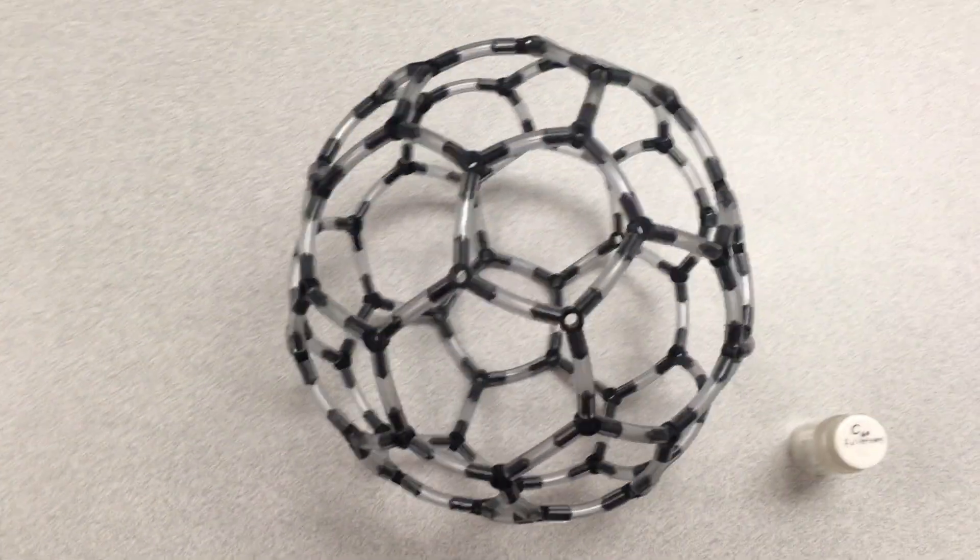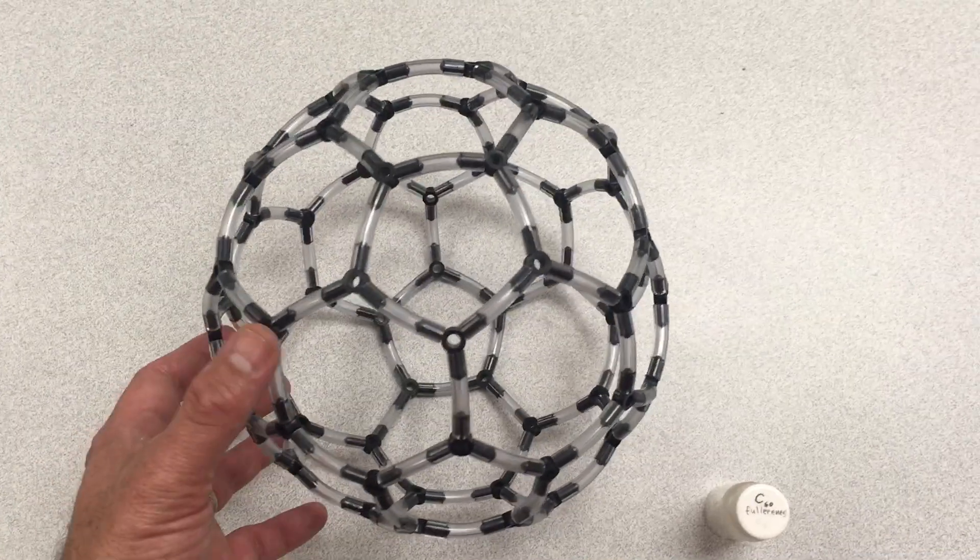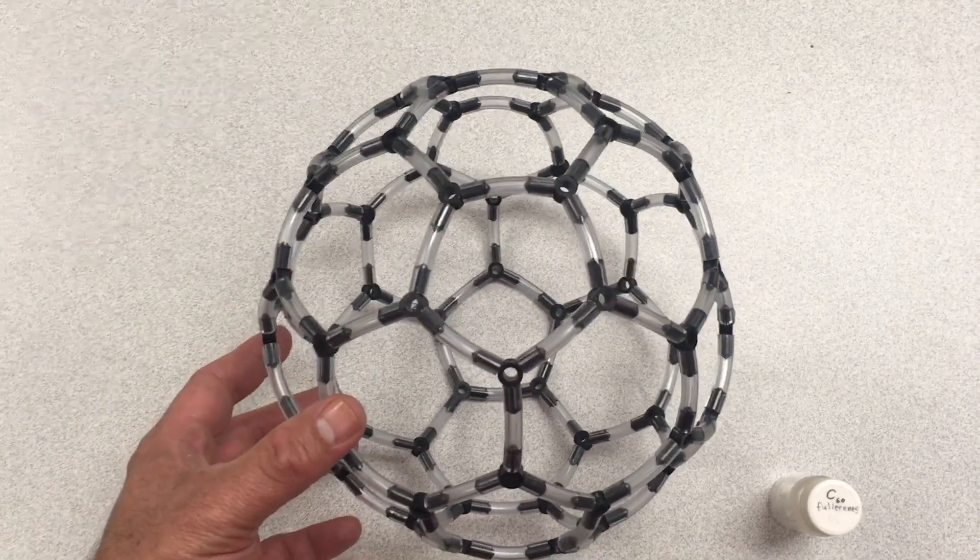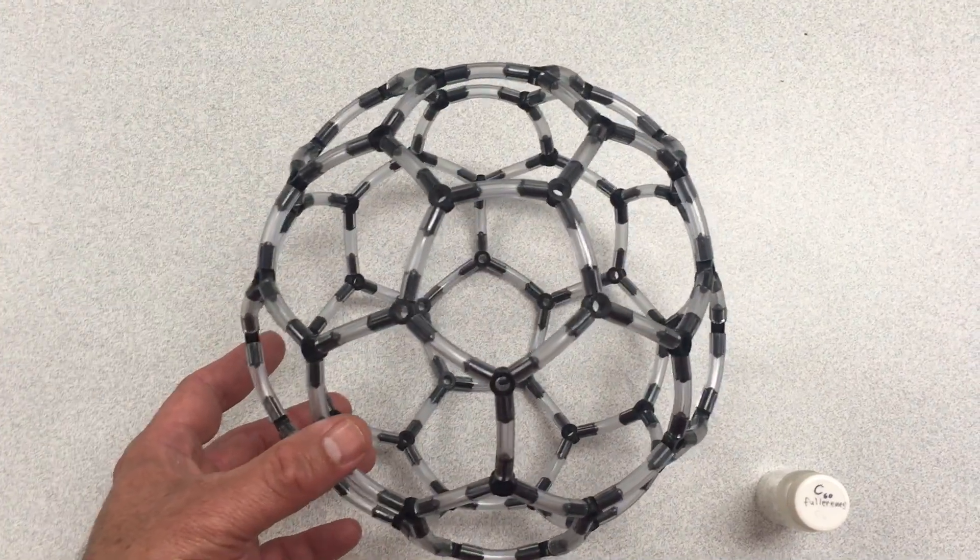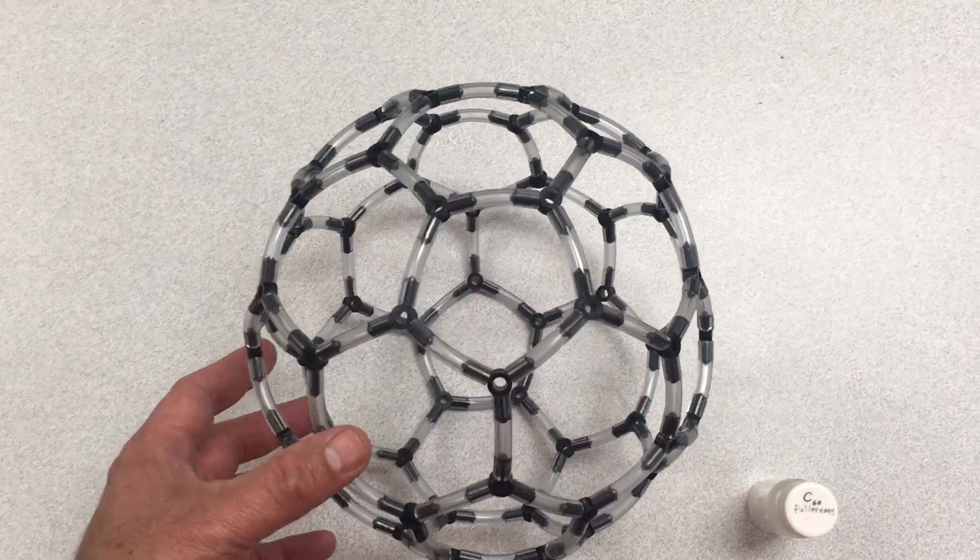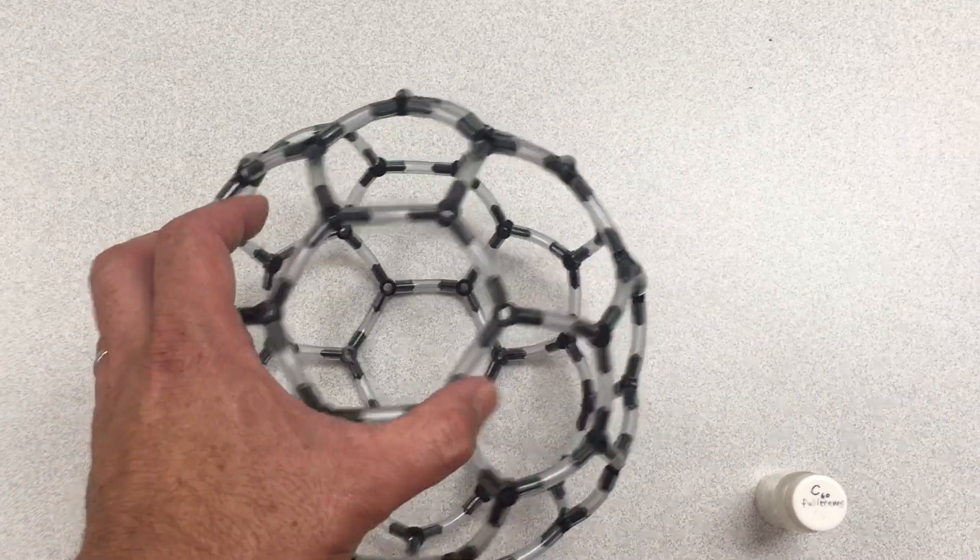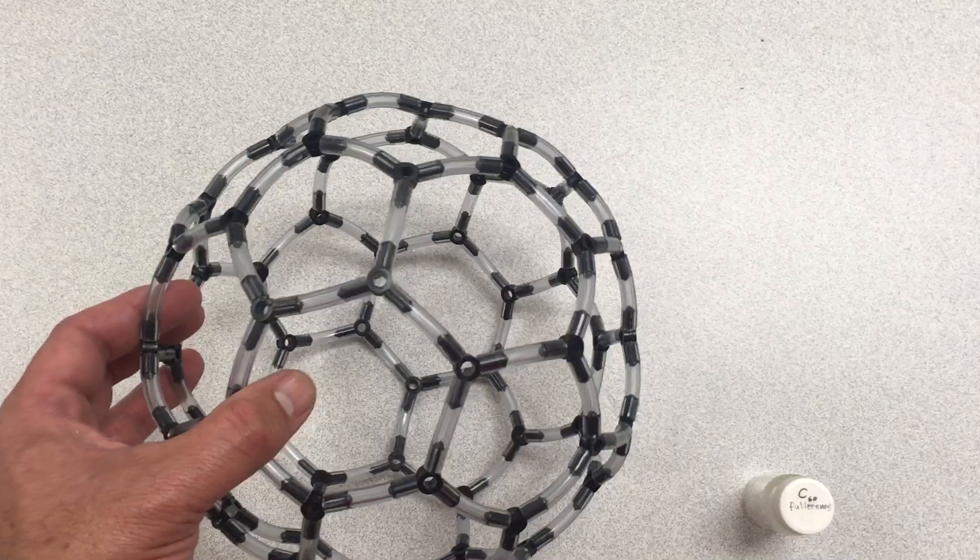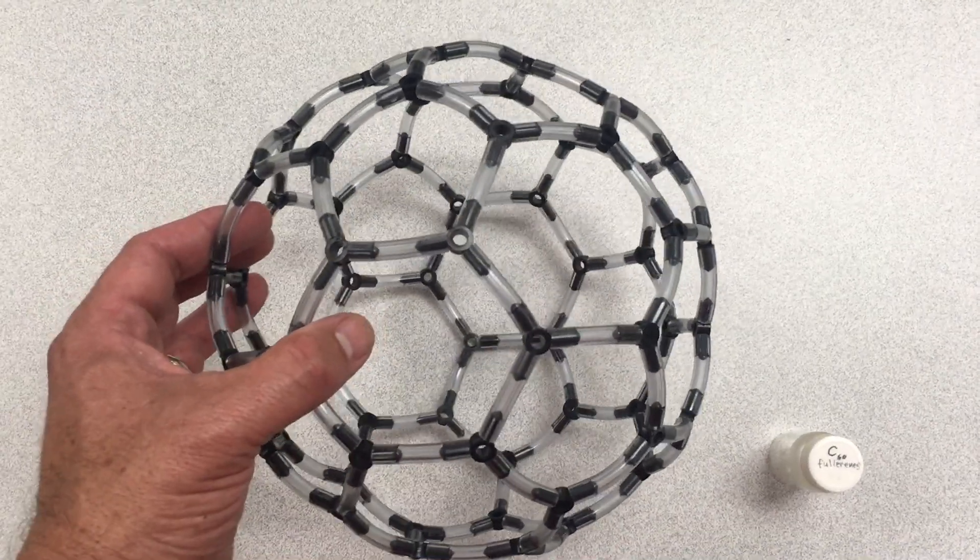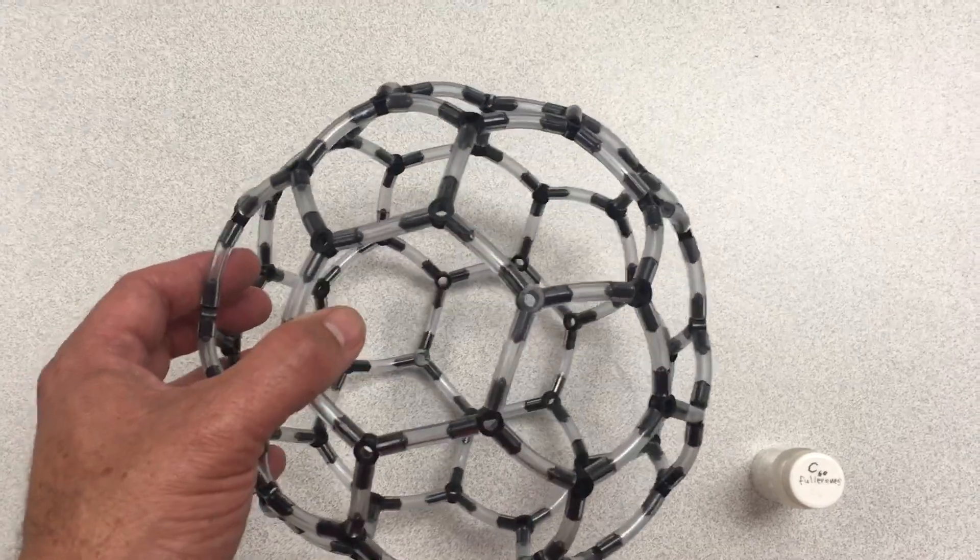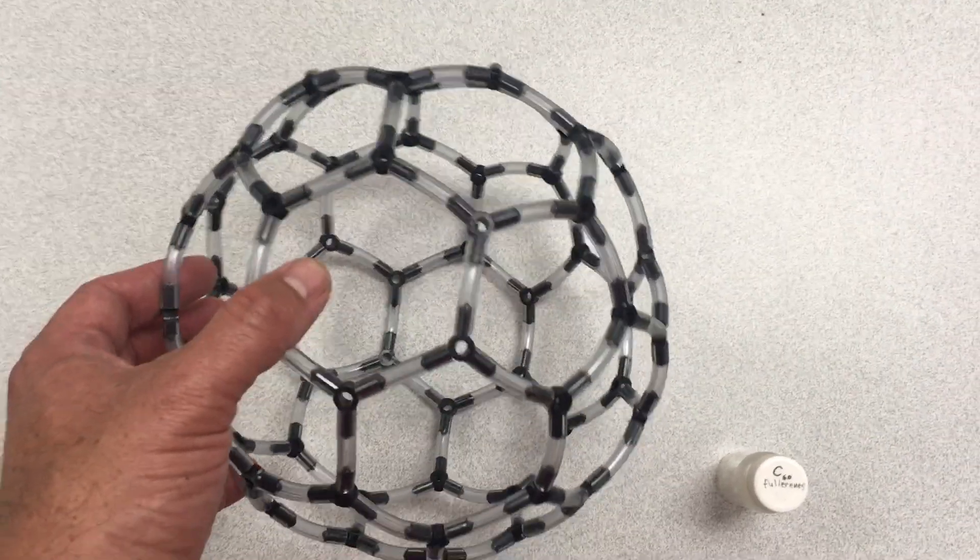And this is the model of a simple fullerene. It's called fullerene because the people who discovered these type of structures thought these look like the geodesic domes that were attributed to Buckminster Fuller. And so they're called Buckminster Fullerenes, they're called fullerenes, they're sometimes called buckyballs.